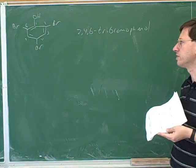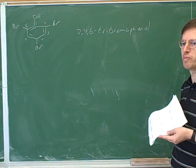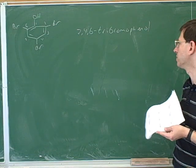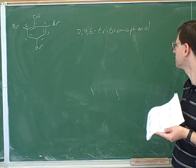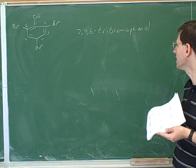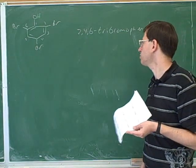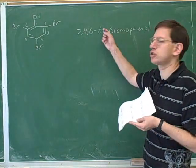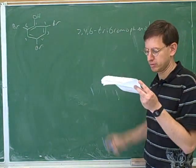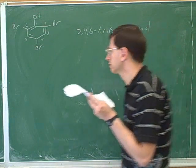Again, where there's more than two substituents, we can't use ortho, meta, or para. So this is really the only way we could name this using the phenol name. And it's important to remember that you can't just say 2,4,6-bromophenol — you have to say tribromo.